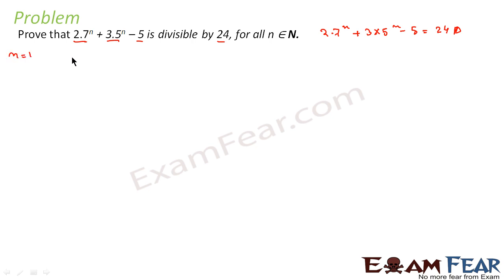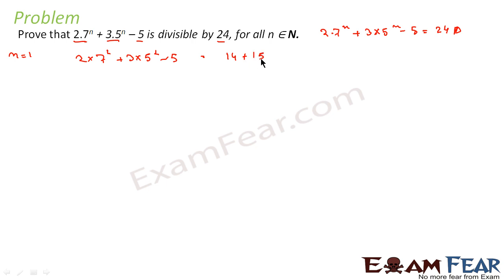Let's prove for n is equal to 1. What we get is 2 into 7 to the power 1 plus 3 into 5 to the power 1 minus 5. That gives us 14 plus 15 minus 5, which equals 24. And 24 is divisible by 24, so the statement is true for n equal to 1.